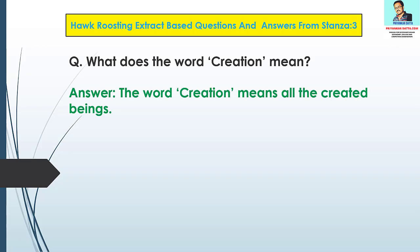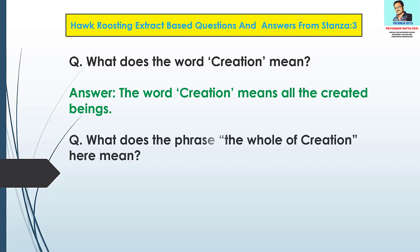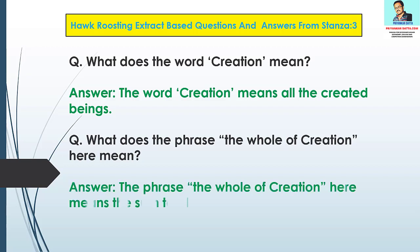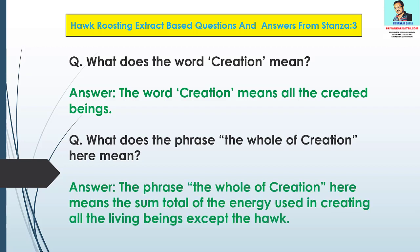Question 4: What does the phrase 'the whole of creation' here mean? Answer: The phrase 'the whole of creation' here means the sum total of the energy used in creating all the living beings except the hawk.